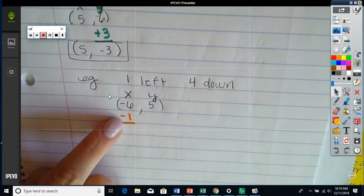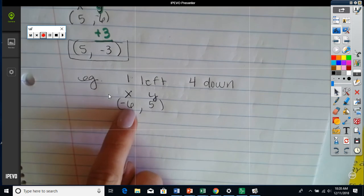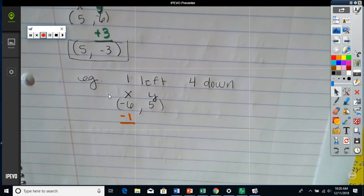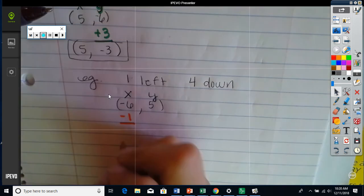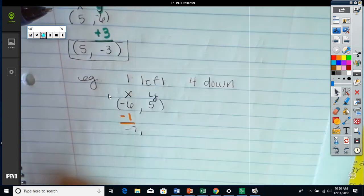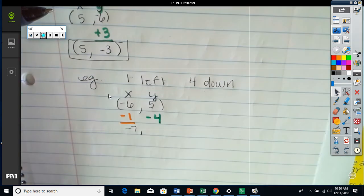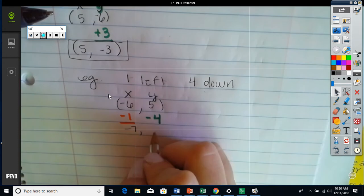Negative six minus one. Comma. Now, when I move down, is that minus or plus, Emily? Down. Minus. Five minus four is one.